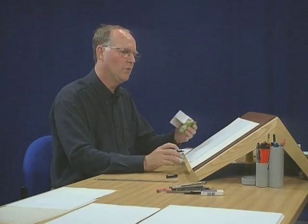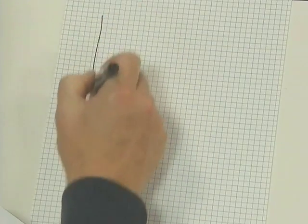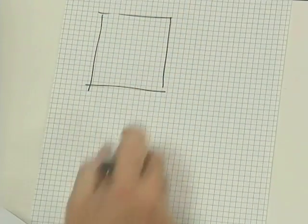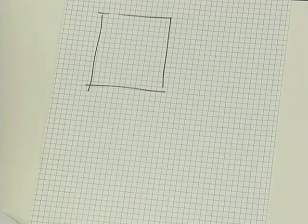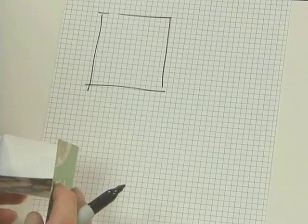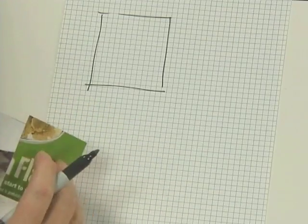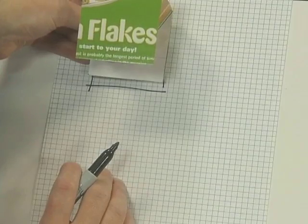So let me sketch out first of all approximately what I'm going to be doing. I want to sketch onto my gridded paper the side elevation. Now we could either copy this from the drawing given in Activity 3 or we could measure it from the actual model itself. That's going to be the view on there.